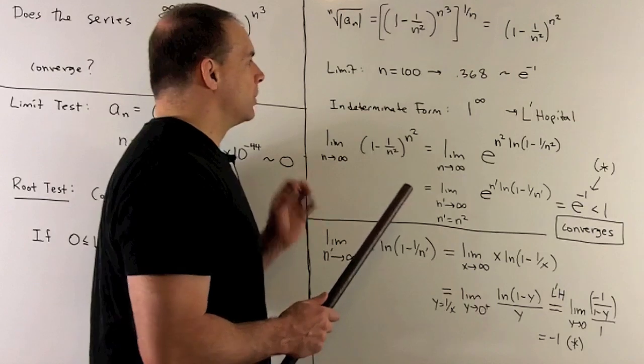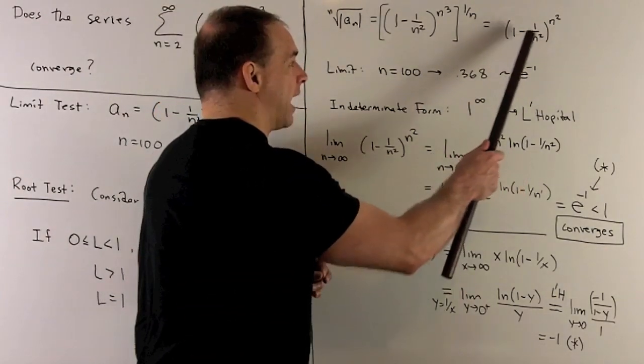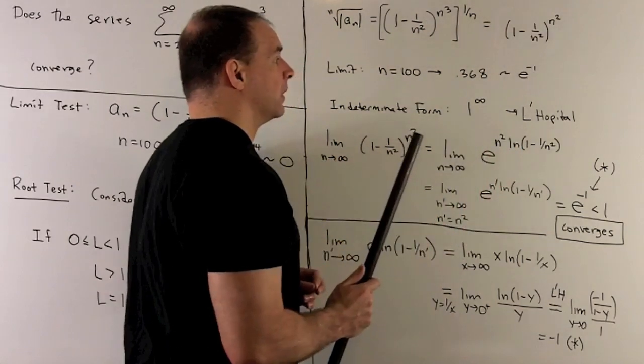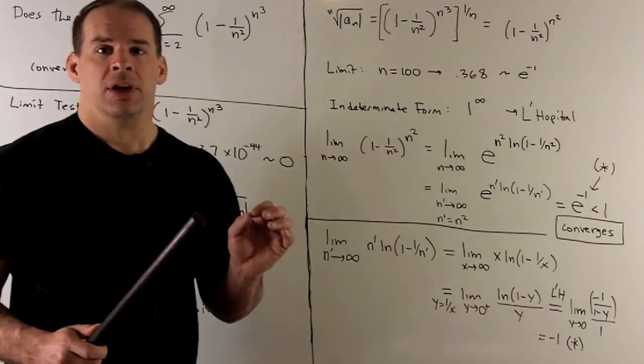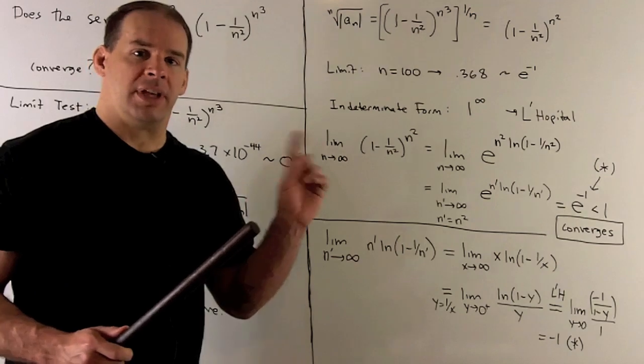Now, consider what happens when we take n going to infinity in here. Note, we're going to have this term goes to 0, so I'll have a 1. This term goes to infinity. So we're looking at an indeterminate form 1 to the infinity. So we're going to bring in L'Hôpital's rule.